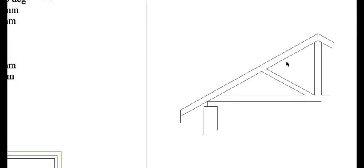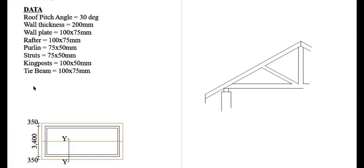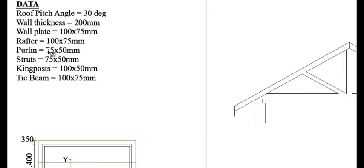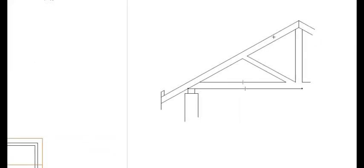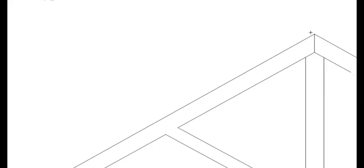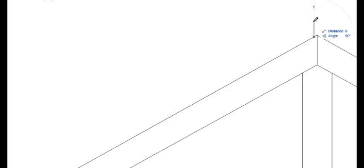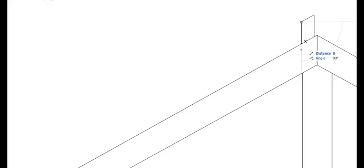The next thing we have to do is place our purlins. The dimensions for the purlin are given to be 75 by 50 millimeters. 75 to the scale is going to be 8 millimeters. So we are going to draw an 8 millimeter long line, then 5 millimeters at a 30 degree angle, and 8 millimeters like that. You can do another one from the top at this point here — 8 millimeters long, then 30 degrees again, 5 millimeters like that.